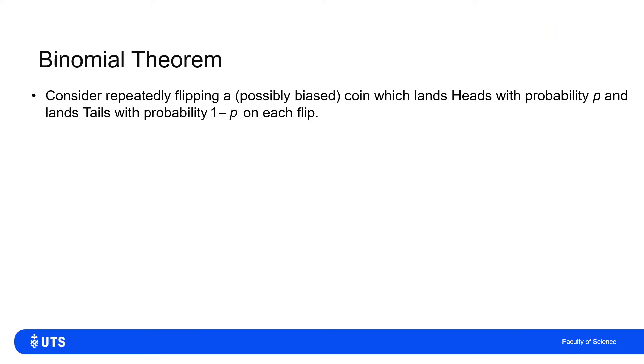Now these are related to the binomial theorem. Maybe you've done a bit of probability theory, maybe you haven't. But if I think of flipping a coin, and I'm not going to assume now that the coin is fair, it might be biased. But let's say when I flip it, each time it has probability p of landing heads, and therefore probability one minus p of landing tails on each flip.